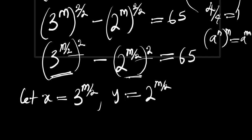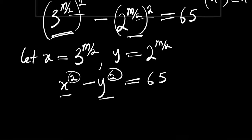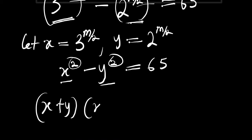By doing this substitution, solving the equation becomes a bit shorter. We are going to have x squared minus y squared equals 65. This becomes a difference of two squares, and going by the formula for difference of two squares, we have x plus y times x minus y equals 65.